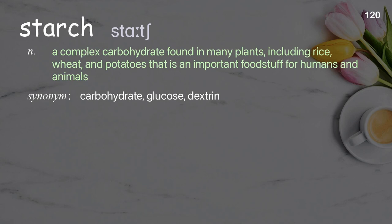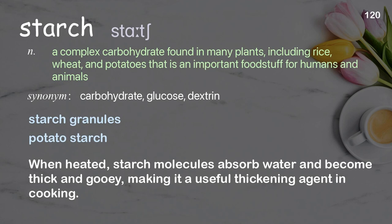Starch: A complex carbohydrate found in many plants, including rice, wheat, and potatoes, that is an important foodstuff for humans and animals. Examples: starch granules, potato starch. When heated, starch molecules absorb water and become thick and gooey, making it a useful thickening agent in cooking.